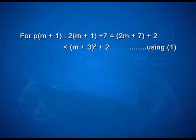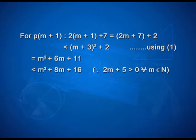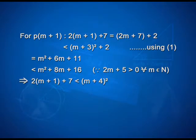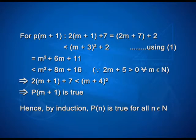For p(m+1), we write 2(m+1) plus 7, which simplifies as 2m plus 7 plus 2. This is less than (m+3)² plus 2 using equation 1. Expanding, we get m² plus 6m plus 11, which is obviously less than m² plus 8m plus 16. Note this step: since 2m plus 5 is greater than 0 for every m belonging to natural numbers, we can use the inequality sign. Therefore, 2(m+1) plus 7 is less than (m+4)², which implies p(m+1) is true. Hence by principle of mathematical induction, p(n) is true for all n belonging to natural numbers.